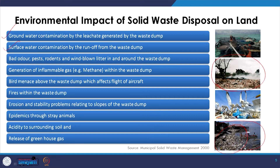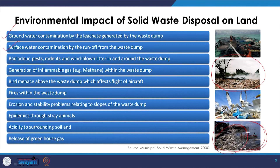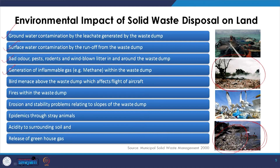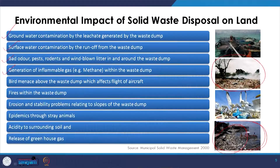Another impact is surface water contamination — when waste is disposed near rivers or ponds, leachate and runoff carrying contaminants enter water bodies. Then there is bad odour, pests, rodents, and wind-blown litter around the waste dump — rats, insects, and cockroaches thrive in such areas. There is also generation of inflammable gases, especially methane, within the waste dump because of the decomposition process happening within mixed organic and inorganic waste.